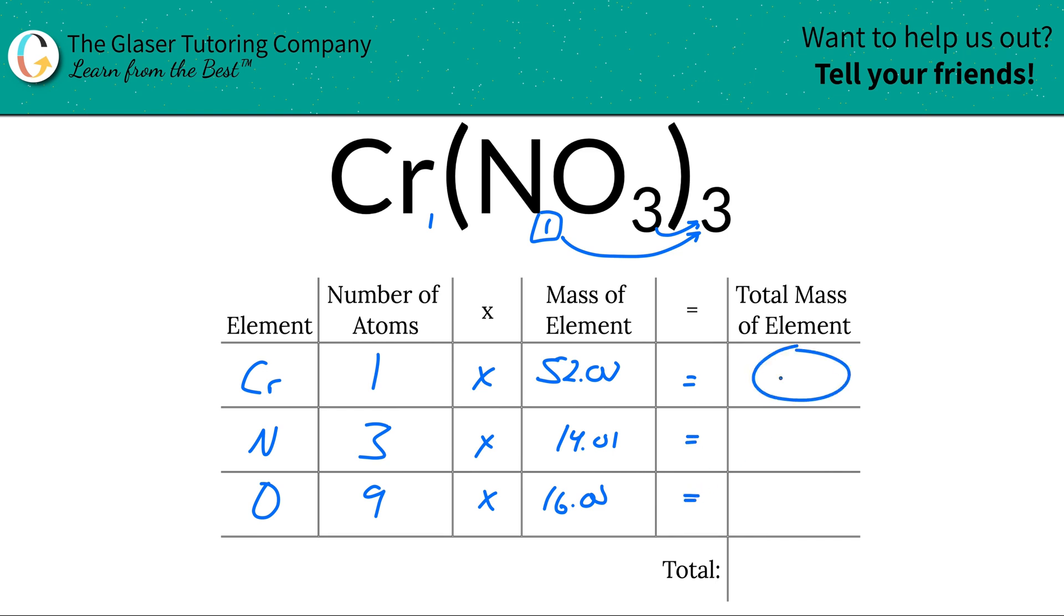All we've got to do then to find the total mass of each element, we just simply multiply this row across. So 1 times 52, hopefully I know what that is. 14.01 times 3, so that's about 42.03. And then 9 times 16 will be approximately 144. Same thing as like 12 times 12, I wonder why that works.